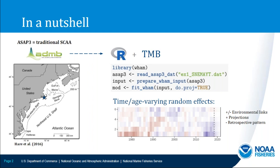You'll see plots where the x-axis is year and the y-axis is age, showing deviations or random effects where positives are in red and negatives are in blue. WAM also includes the ability to estimate environmental links to time-varying productivity, and projections are handled very naturally with random effects. Many of these models have reduced retrospective patterns. That was WAM in a nutshell.